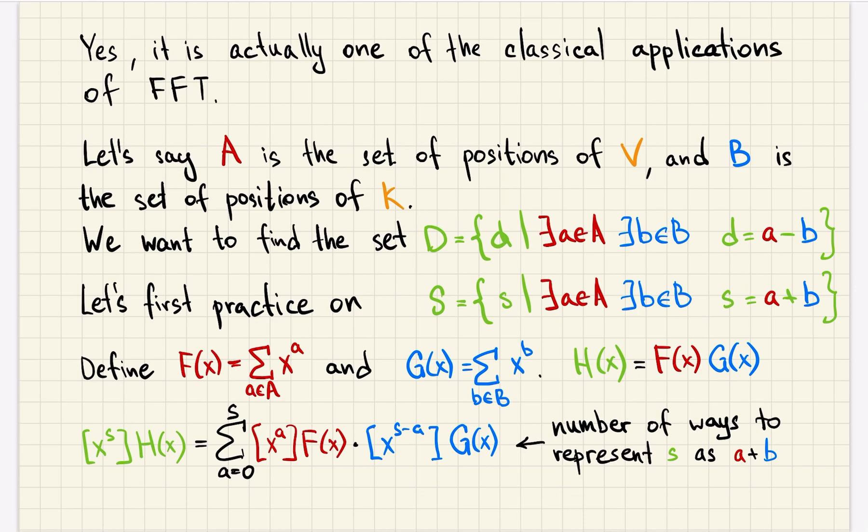Let's say that A is the set of positions of characters v and B is the set of positions of characters k. Then we want to find the set of such numbers d so that we can choose some position a from A and choose some position b from B